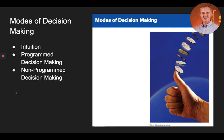In summary, the process of decision making varies with respect to whether it results from intuition or a more rational process. When a problem or situation is familiar to an individual, decisions are usually made based on intuition or a person's gut feelings. Programmed decisions are made in response to recurring problems or situations in an organization. Non-programmed decisions are made in response to problems or situations that are unique or complex and could have important consequences for the organization. When making non-programmed decisions, managers should address these problems with rationality rather than intuition. And that ends the first part of the lecture on managerial decision making.